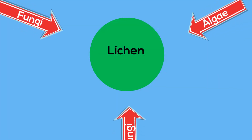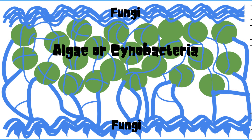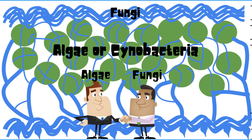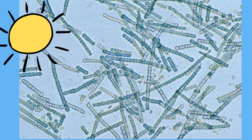A lichen is a composite organism which is the result of algae or cyanobacteria living among the filaments of multiple fungi species in a mutualistic relationship. Cyanobacteria is a type of bacteria that can obtain their energy through photosynthesis, and they are the only prokaryotes to be able to do this.